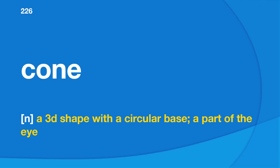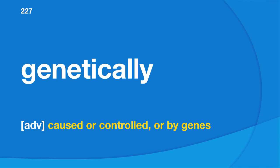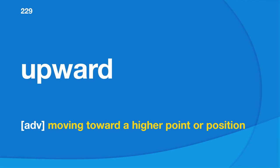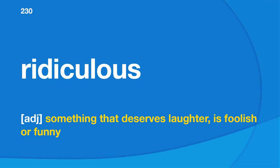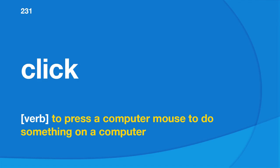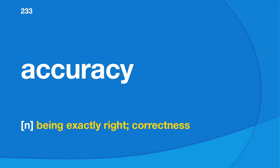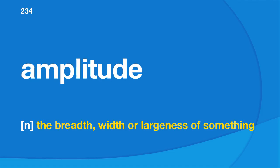Cone: a 3D shape with a circular base; a part of the eye. Genetically: caused or controlled by genes. Conduction: the transmission of heat, electricity, or sound. Upward: moving toward a higher point or position. Ridiculous: something that deserves laughter, is foolish or funny. Click: to press a computer mouse to do something on a computer. Painful: causing or feeling physical pain or hurt. Accuracy: being exactly right, correctness. Amplitude: the breadth, width, or largeness of something.